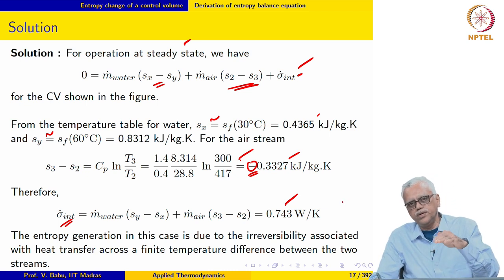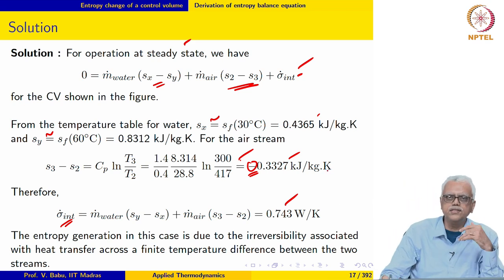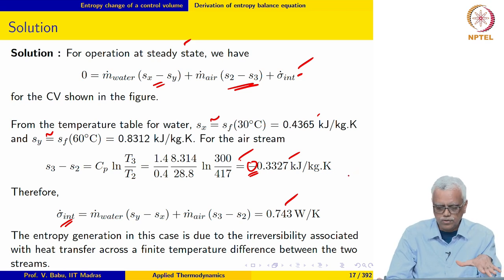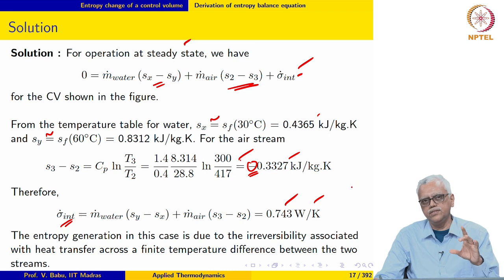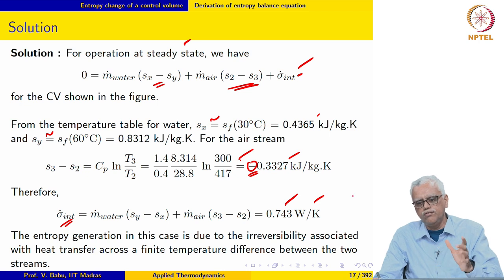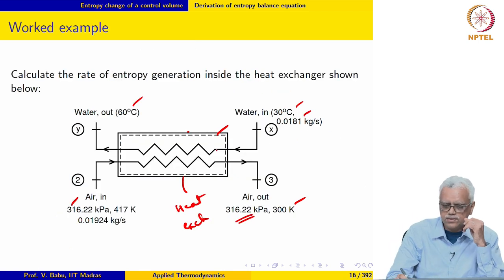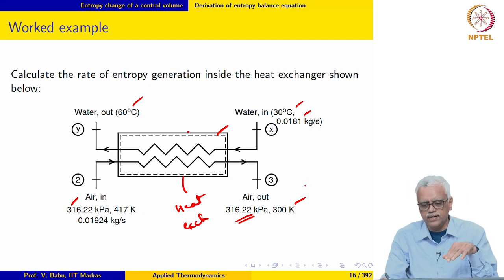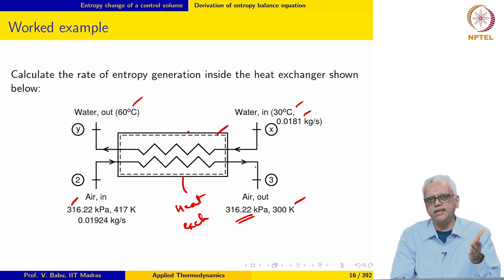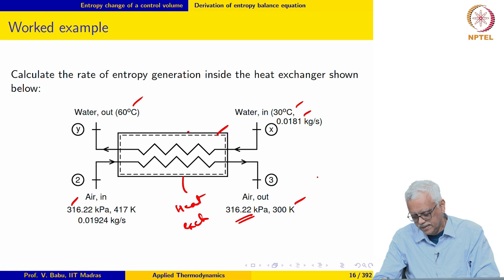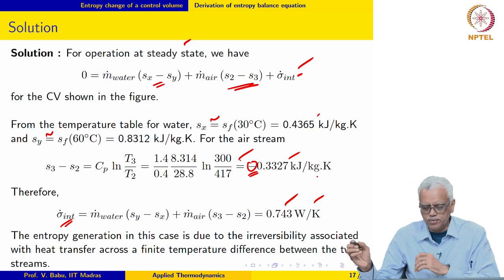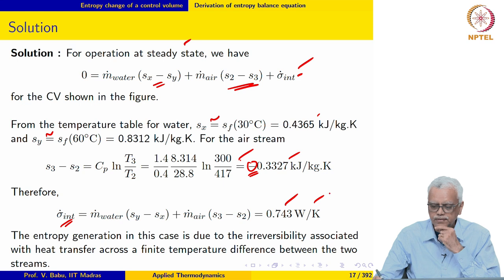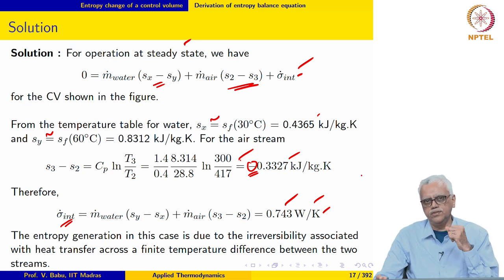Notice that the specific entropy of the air stream decreases but the specific entropy of the water stream increases because it is being heated. The σ̇_int in this case is due to internal irreversibility associated with heat transfer across a finite temperature difference. The water stream has a varying temperature from inlet to outlet, different from that of the air stream, which also has a varying temperature. Heat transfer across this finite temperature difference is what causes entropy generation.